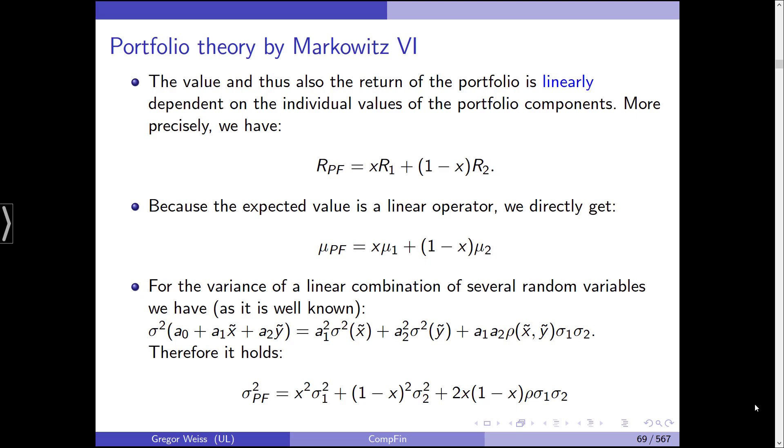For the variance, it's a little bit more complicated, but we do have a very general formula from Statistics 101. That is, for a linear combination of 2 or N random variables, the variance of that linear combination, in our case the portfolio, is given by A1, the first weight, squared times sigma squared, plus A2 squared, sigma squared of the second random variable, plus A1, A2, rho, and then the standard deviations, or 2, A1, A2 times the covariance. You can write it with rho and the standard deviations or using the covariance.